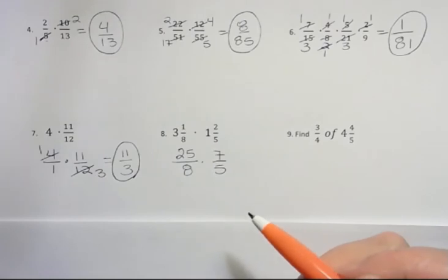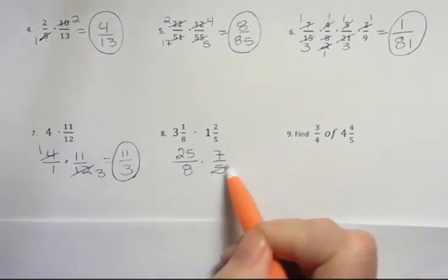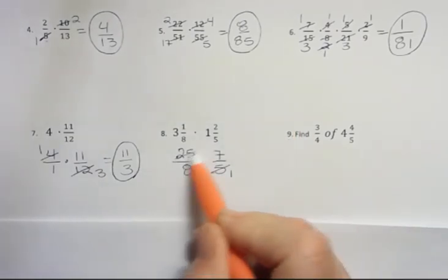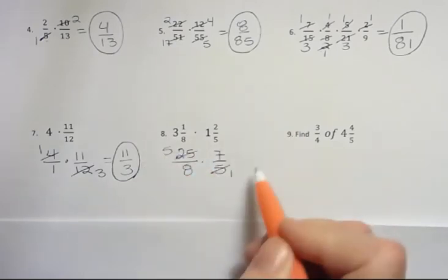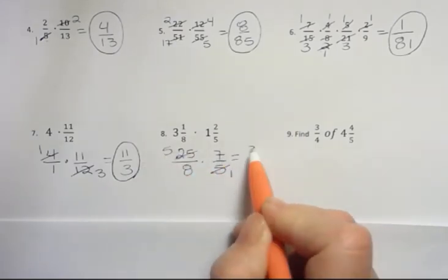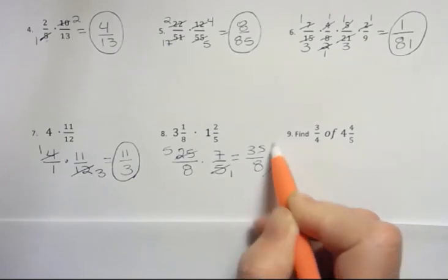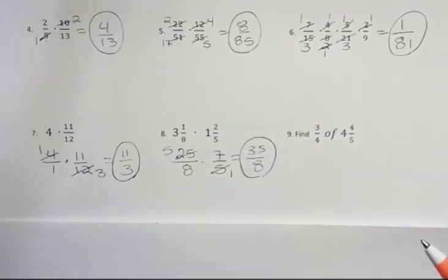And 1 times 5 is 5, plus 2 is 7 over 5. Can I cross cancel here? Yes, I can, because 5 goes into itself one time and into 25 five times. And multiplying straight across, I get 35 over 8. Another improper fraction that I'm going to leave.